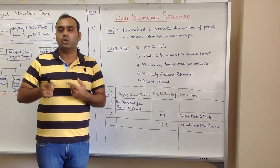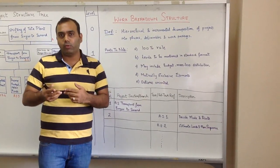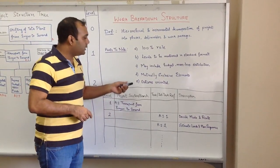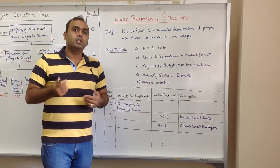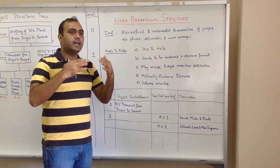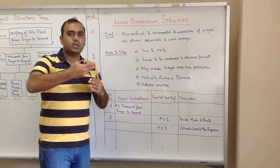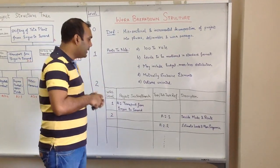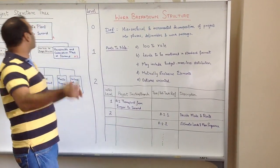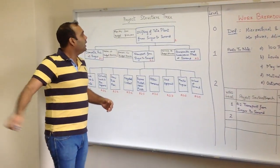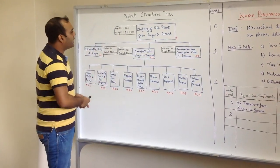There should not be any ambiguity that they're overlapping with each other. It should be outcome-oriented, meaning the levels should be such that they lead to a certain outcome. I'll explain how this happens. Let's come here - this is a project structure tree that I've made.